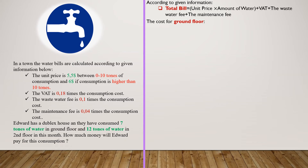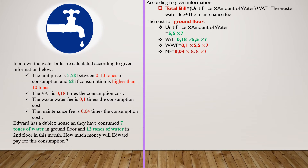Let's have a look at the cost for the ground floor. Since the total consumption is between 0 and 10 tons, the unit price will be 5.5. So consumption cost will be 5.5 multiplied by 7. The VAT is 0.18 multiplied by the consumption cost. The waste water fee is 0.1 multiplied by the consumption cost.